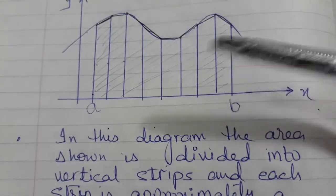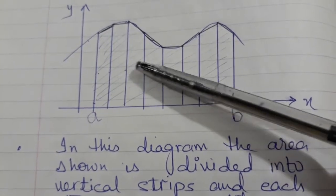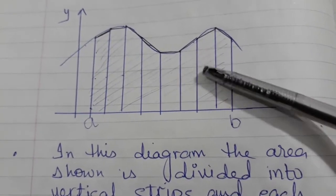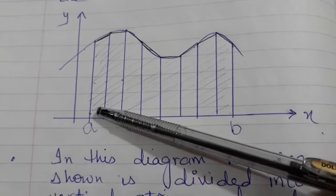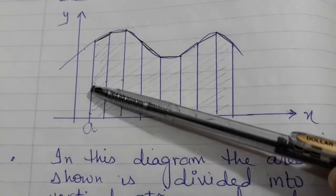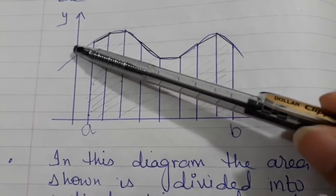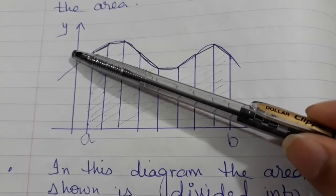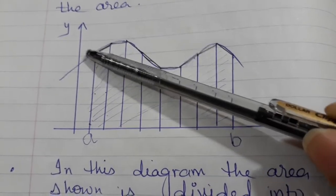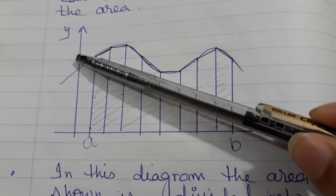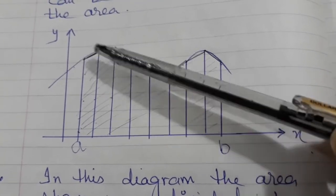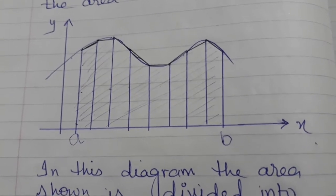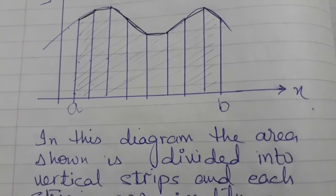Now an important thing: these are called intervals. Each strip is an interval and each strip is bounded by two vertical lines. The length of these vertical lines you can calculate by the value of y, and the value of y is called an ordinate. We will see later how we calculate it.